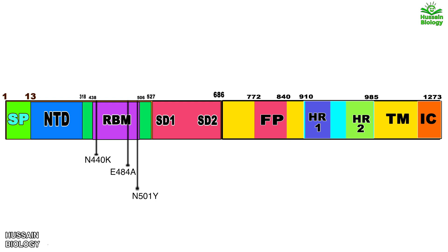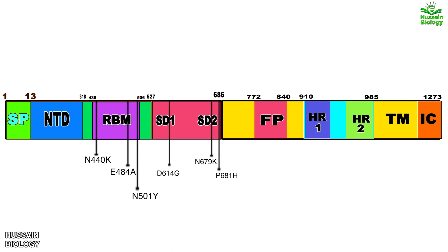The S1 region has three more important mutations: P681H, N679K, and D614G. P681H was previously seen in the Alpha variant, and D614G is also present in the Alpha, Beta, Gamma, and Delta variants. The N679K mutation is unique to the Omicron variant.